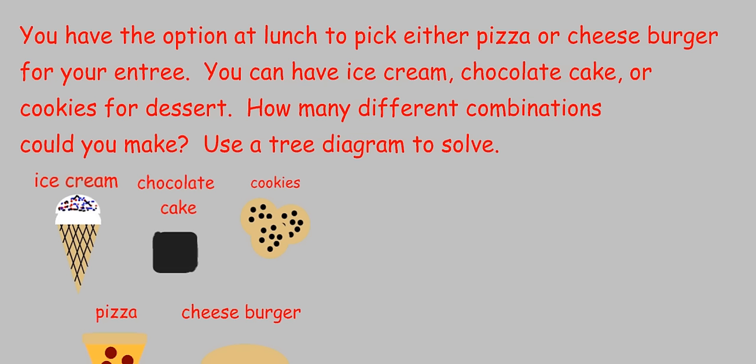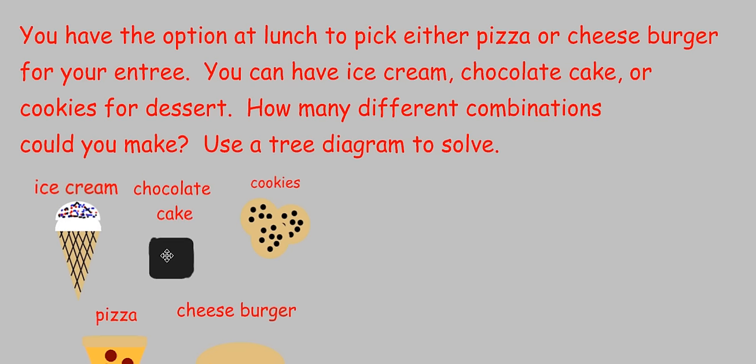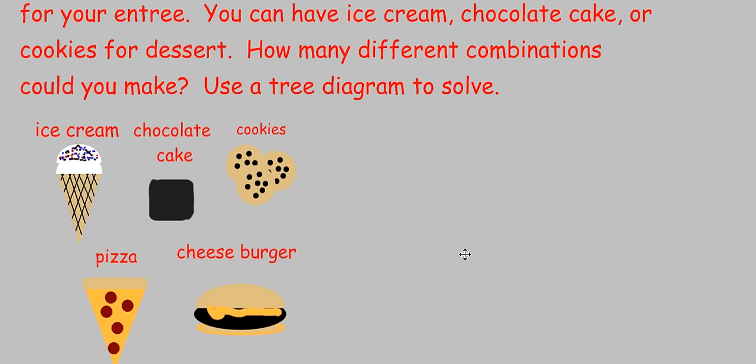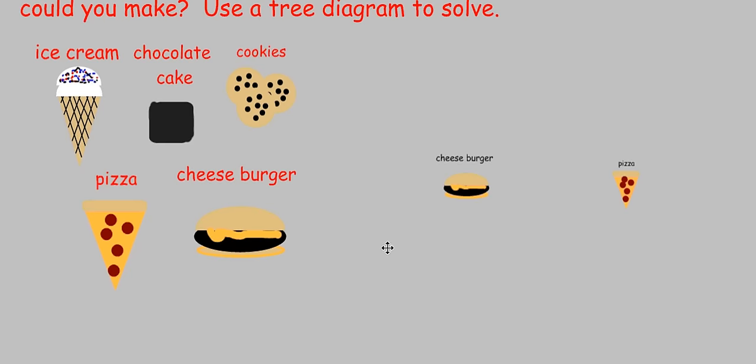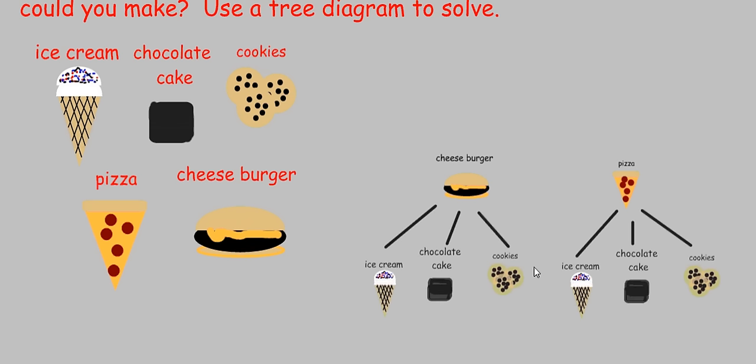Now we're going to move on. You have the option at lunch to either pick pizza or a cheeseburger for your entree. So here we have pizza and here we have a cheeseburger. You can have either ice cream, chocolate cake, or cookies for dessert. So we have chocolate cake, cookies, ice cream. How many different combinations could you make? Use a tree diagram to solve. And we're just going to say that you can only have one entree and one dessert to kind of simplify this. Well, if we made a tree diagram, first we would put the entrees. And then we have to realize that the entrees can go with each type of dessert. So we have a total of six different possibilities.